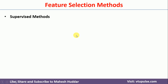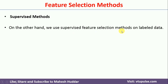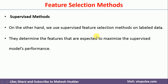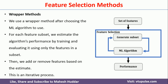Supervised feature selection methods are applied to labeled data. We try to select those features that will maximize the performance of the supervised model. These methods are divided into three groups. In the wrapper method, given a set of features, we generate subsets of features and give each subset to a machine learning model. This is repeated for all subsets, and the subset that gives the maximum performance is considered the final feature set.